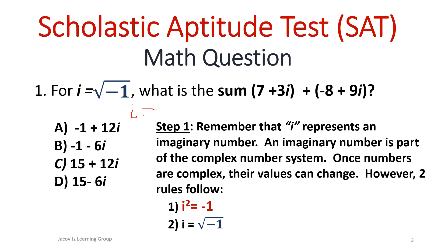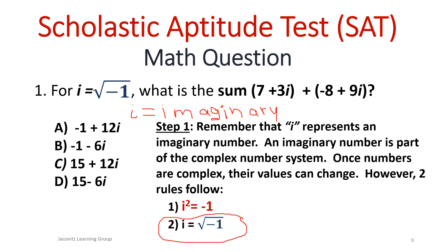I equals imaginary, and an imaginary number is part of the complex number system. You have two different rules here. I squared — meaning imaginary number squared — gives you negative one. And I regular gives you the square root of negative one. This is the only time, when you're in the imaginary number system — like you're flying over to Tinker Hollow to meet Tinker Bell and doing math — that you can do something this way.